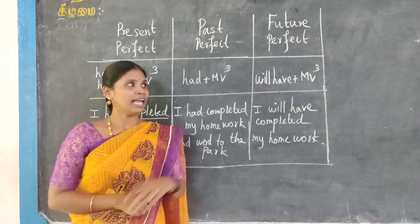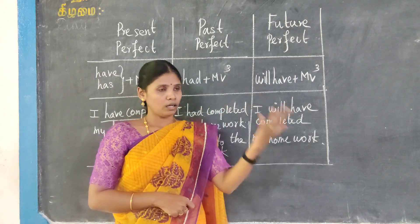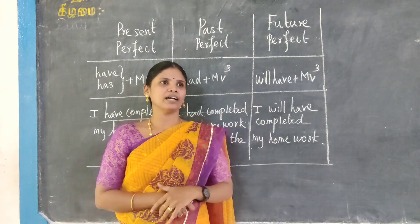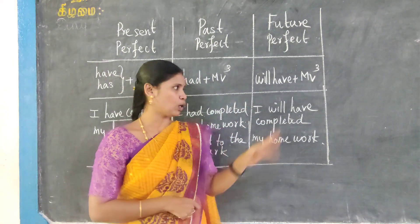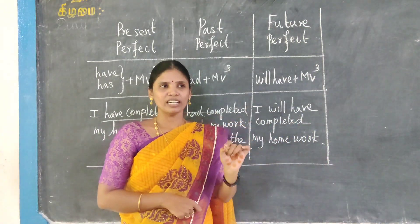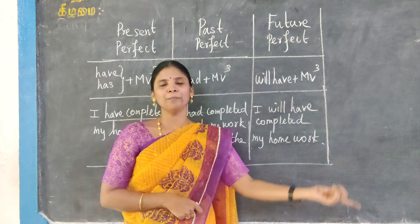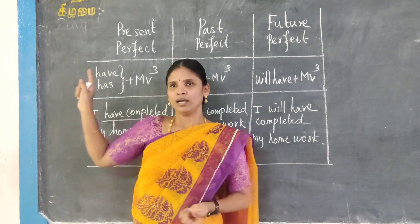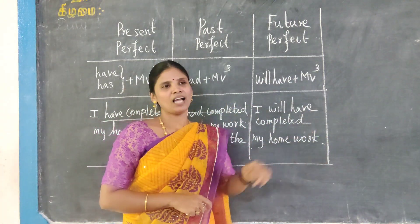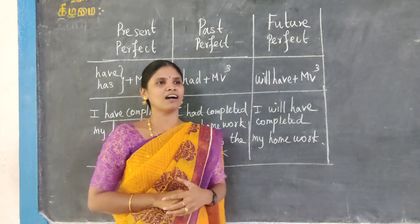We move on to future perfect. Future perfect is for an action that will be done in the future. For example, I will have completed my homework. This is future perfect tense — the key word for perfect tense.